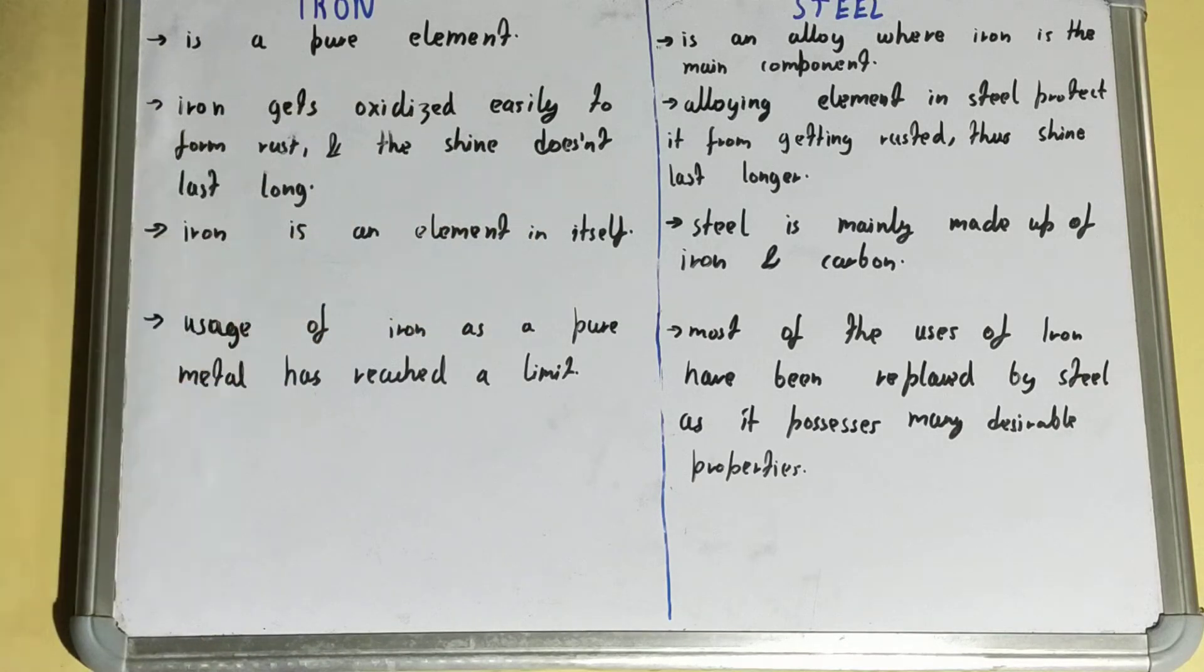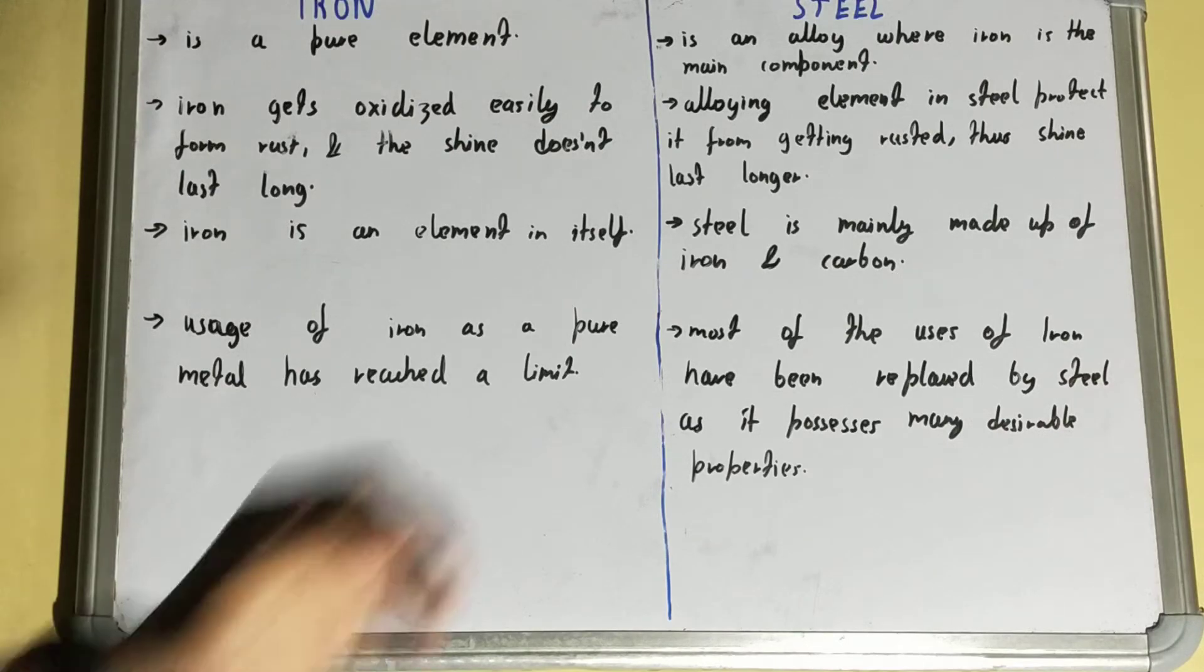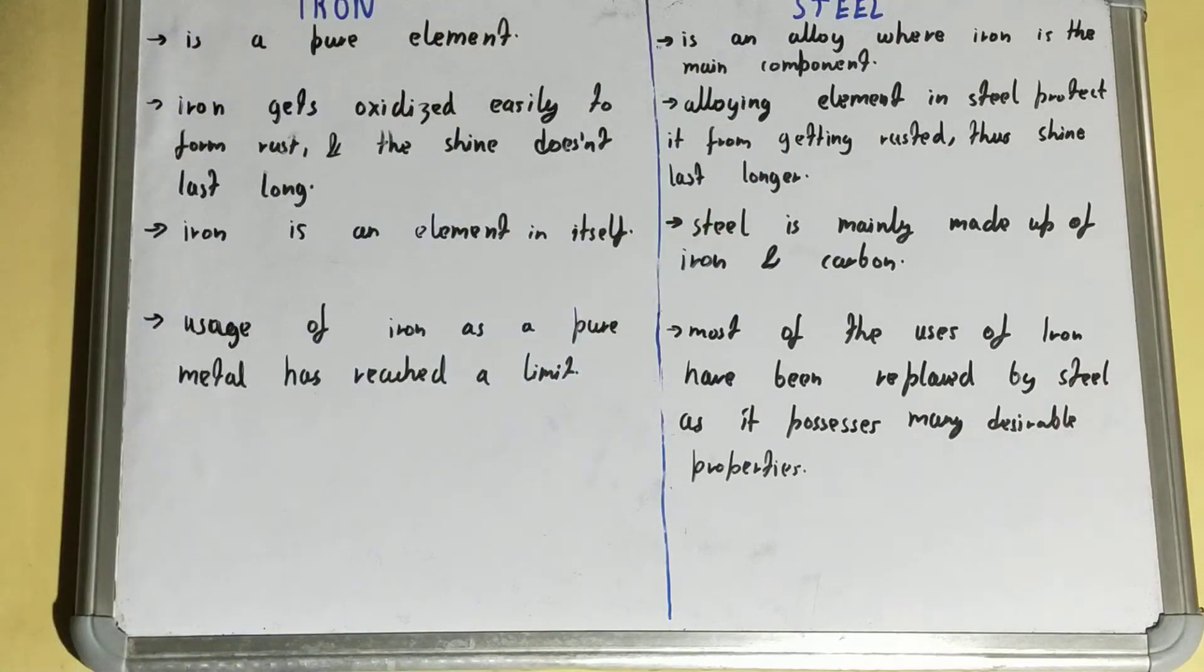Because of this, the shine doesn't last long, and that makes it less preferable for long-term uses like your utensils at home. But if we talk about steel, then alloying...